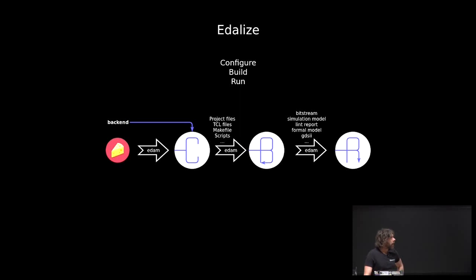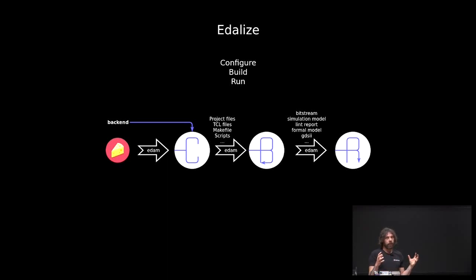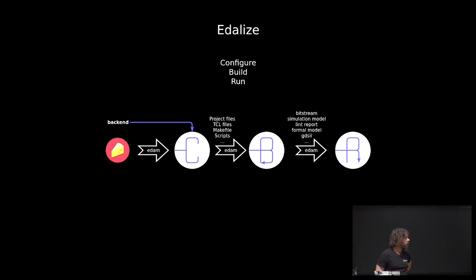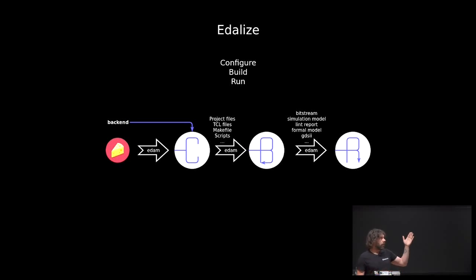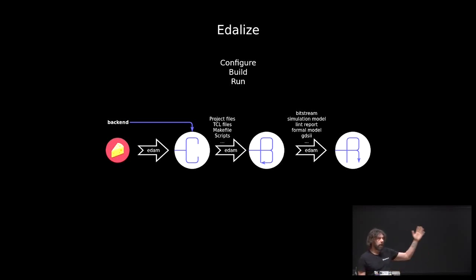Looking a bit closer, Edelize has three stages, as I call them: configure, build, and run. Configure takes your EDAM description and transforms it into the EDA tool-specific setup. It could be command line instructions, creating a Vivado project, or creating TCL scripts for a specific tool. The build stage then transforms this into some kind of artifact — if it's a simulation, you get a simulation; if it's an FPGA flow, you will have an FPGA bitstream.